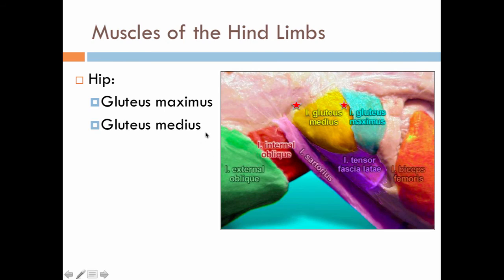Muscles of the hind limbs: gluteus maximus, seen here, and gluteus medius. This is the tail end of the cat, and down here would be the head end. You can use the external oblique to orient yourself. Gluteus maximus is more caudal or towards the tail end, and gluteus medius is more towards the head. Remember this is a superior, dorsal view.